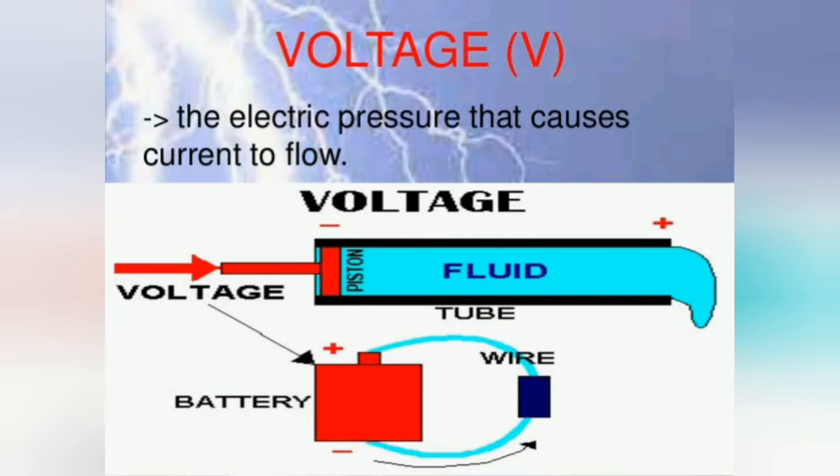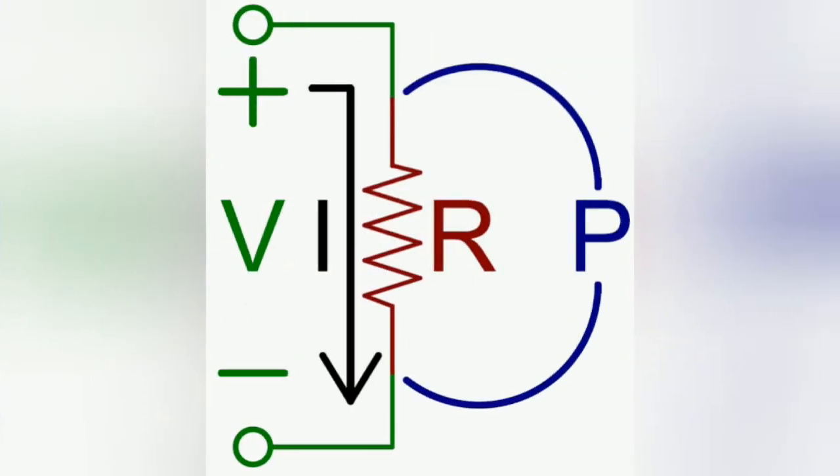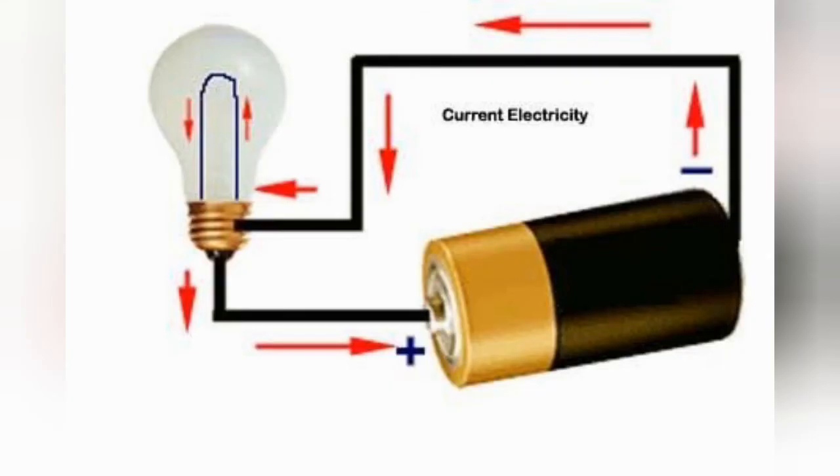Once a load is connected to a source, a complete flow path is created and current flow is established. It flows from the source to the load and back to the source.